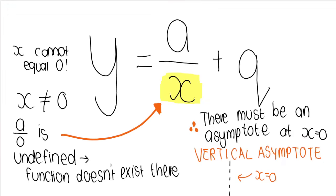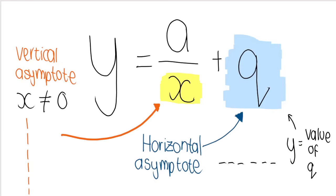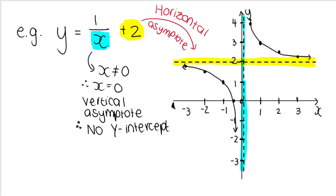Then these are just some summary slides to help you remember about your vertical asymptote. So it's where x is equal to zero. And your horizontal asymptote, where y is equal to the value of q. Here's that example again that I showed earlier, illustrating that our horizontal asymptote is positive two. Y is equal to positive two. And our vertical asymptote is x is equal to zero, which means there's no y-intercept.